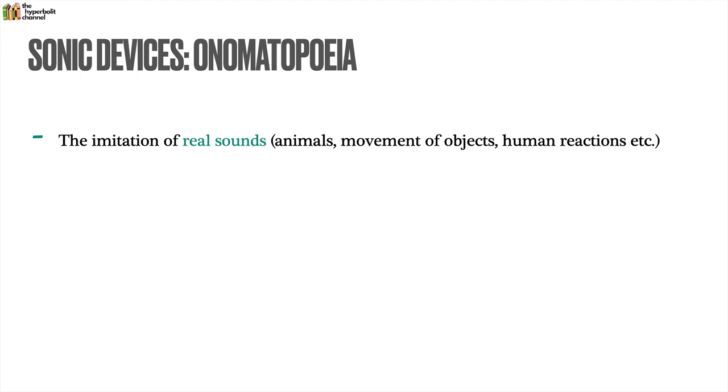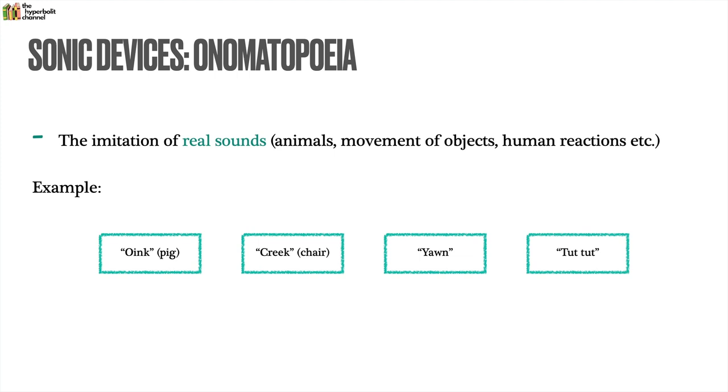Next up, we move on to the sonic devices. Let's start with the easiest one: onomatopoeia. Onomatopoeia is the imitation of real sound — it could be anything from animal sounds, movement of objects, to human reactions. Some examples would be oink, creak, yawn, tap tap. Anything that's a phonetic mimicry of a sound that's been emitted — that's onomatopoeia.